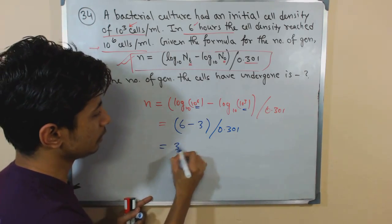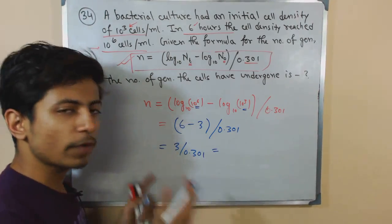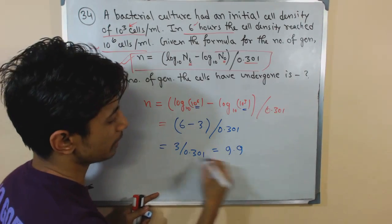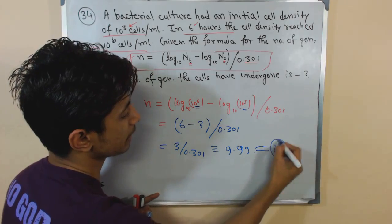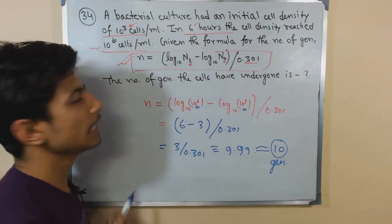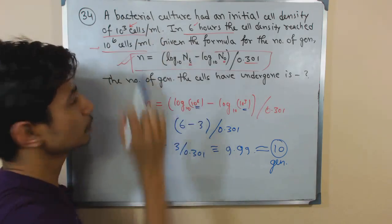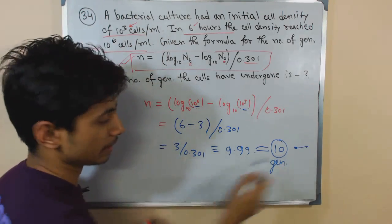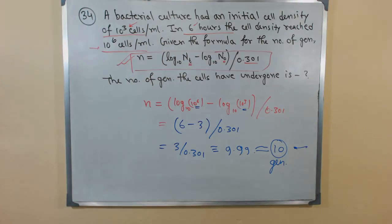3 divided by 0.301 gives approximately 9.97, which rounds to approximately 10 generations. So the number of generations taken to go from 10 to the power 3 cells per ml to 10 to the power 6 cells per ml is 10 — that is going to be the answer.